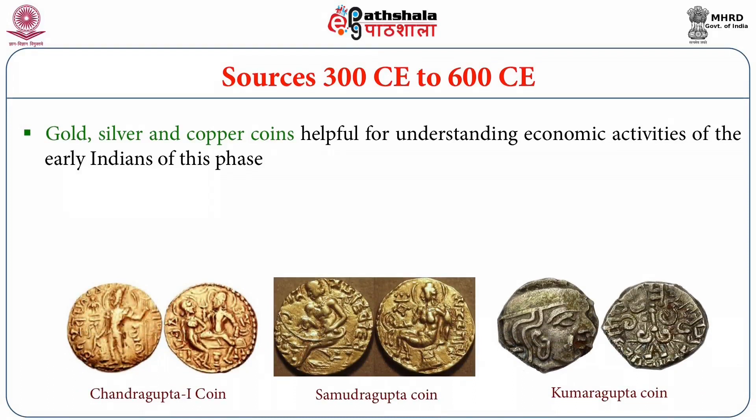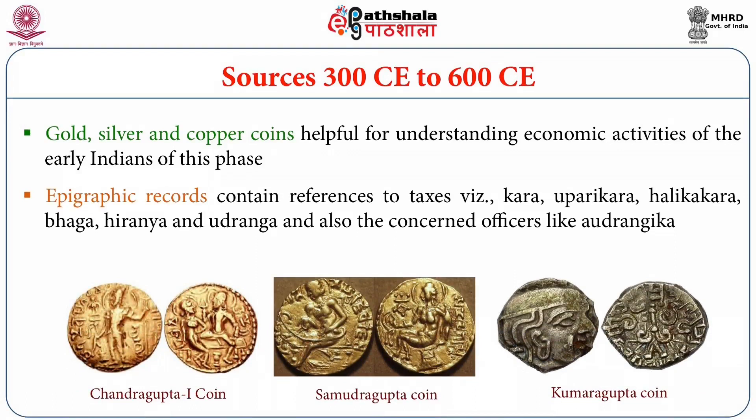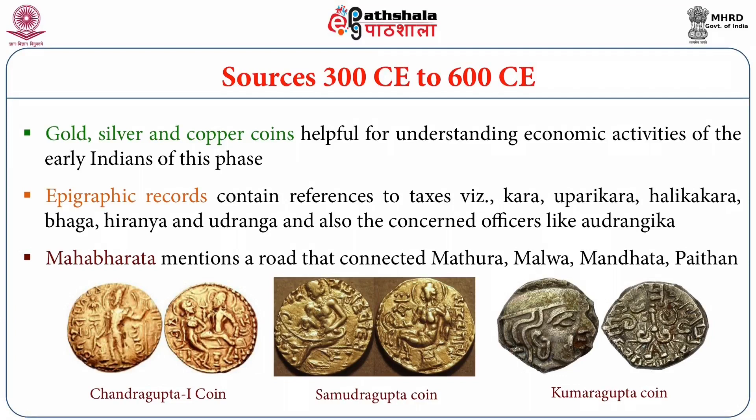Gold, silver, and copper coins are helpful for understanding economic activities of early Indians of this phase. Epigraphic records contain references to taxes — Kara, Uparikara, Halikakara, Bhaga, Hiranya, and Udranga — and also the concerned officers like Udranga collectors, those associated with the collection of these taxes, were called revenue collectors or officers. The Mahabharata mentions a road connecting Mathura, Malwa, Mandhata, and Paithan. Roads were also important, as people used them to carry on their economic transactions between different places.